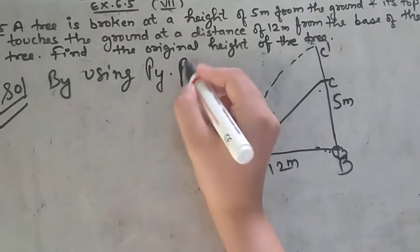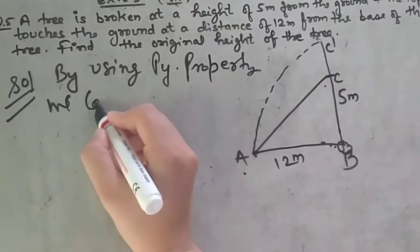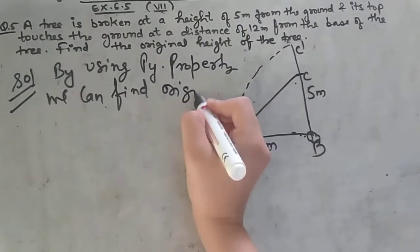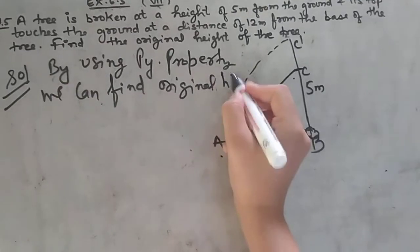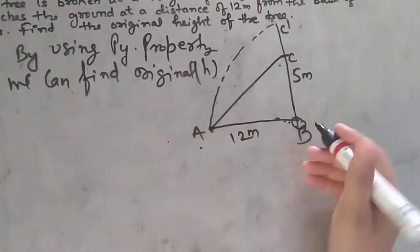By using Pythagoras property, we can find the original height.